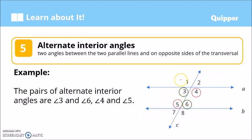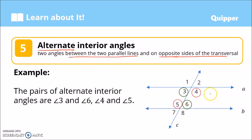We also have alternate interior angles. These are two angles between the two parallel lines and on opposite sides of the transversal. 'Interior' means the angles are inside the parallel lines, and 'alternate' means they are on opposite sides of the transversal. For example, angle 5 and angle 4 are alternate interior angles, as are angle 3 and angle 6.